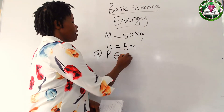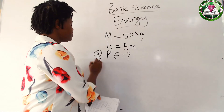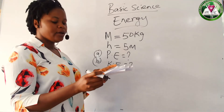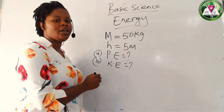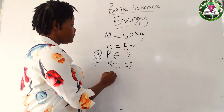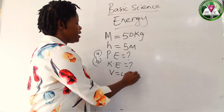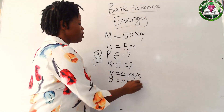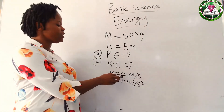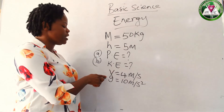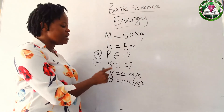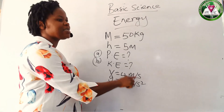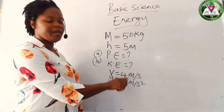We are asked to calculate: A — potential energy, and B — kinetic energy of the fruit if the velocity is 4 meters per second. The velocity is equal to 4 meters per second, and take g to be 10 meters per second squared. Notice the difference: velocity is measured in meters per second, while acceleration due to gravity is meters per second squared.